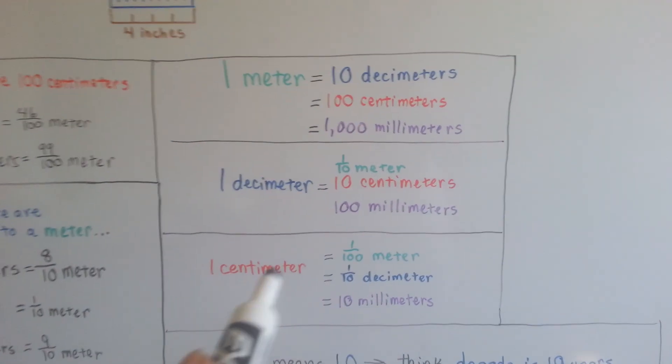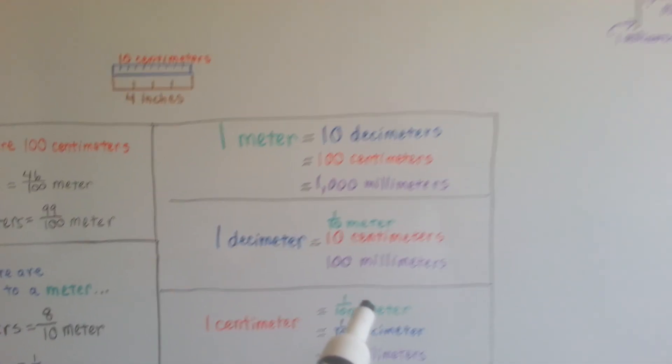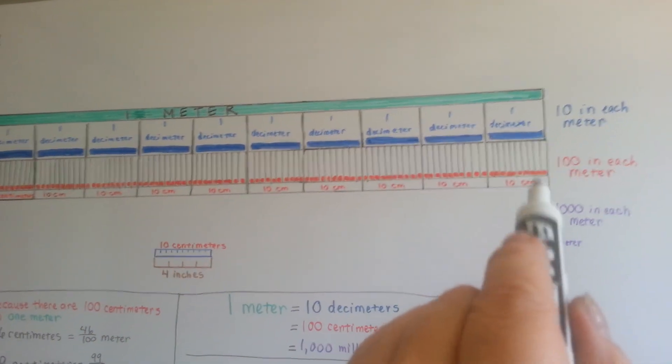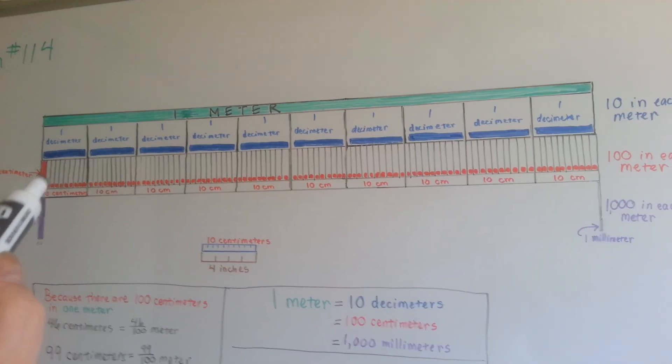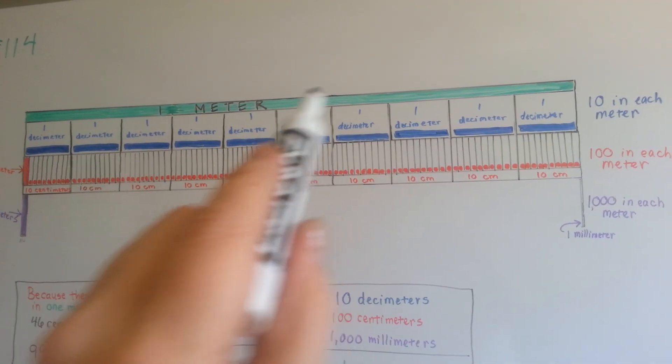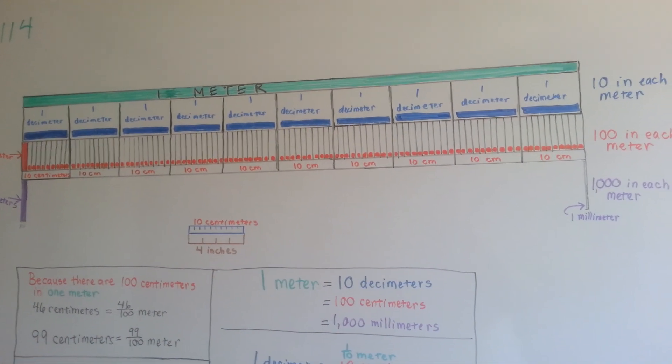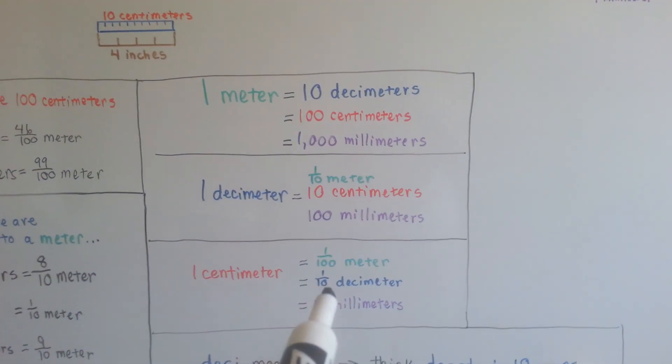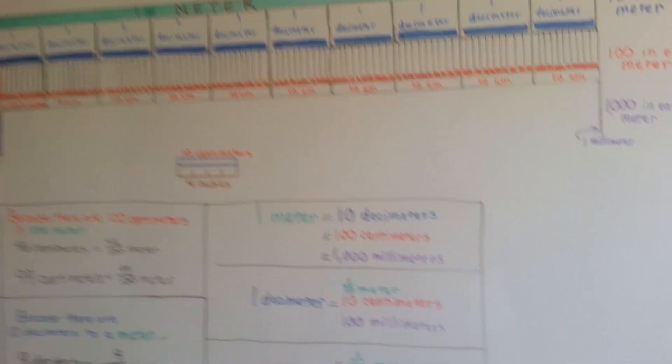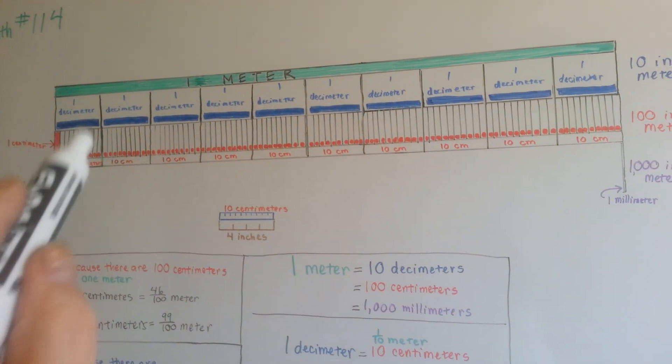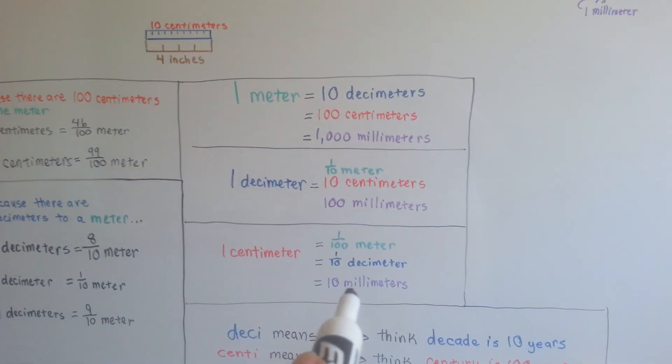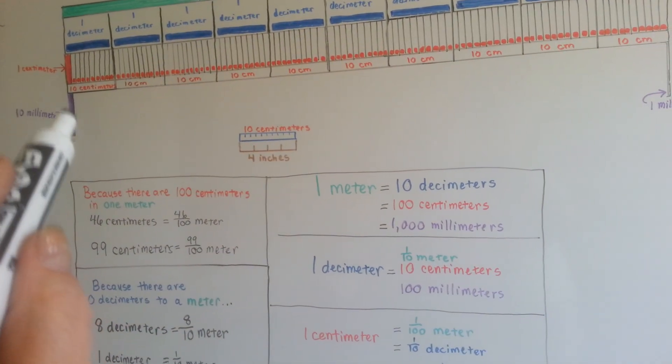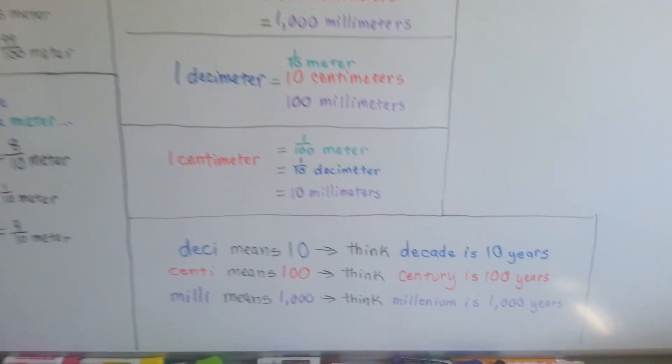One centimeter is one-hundredth of a meter. Because there's a hundred of these red centimeters here, one of them, this one little red bar, is one-one-hundredth of the green meter. It's one of one hundred parts. It's one-tenth of a decimeter. It's one part of ten of decimeters. And it would be ten millimeters. Like I showed you trying to squeeze ten of them into that bar that was the size of a centimeter, and I couldn't do it. It was so tiny.